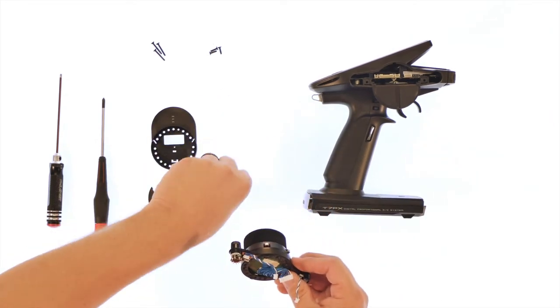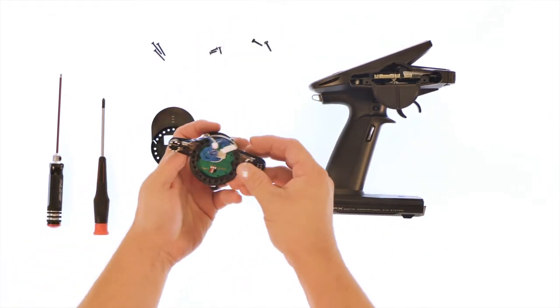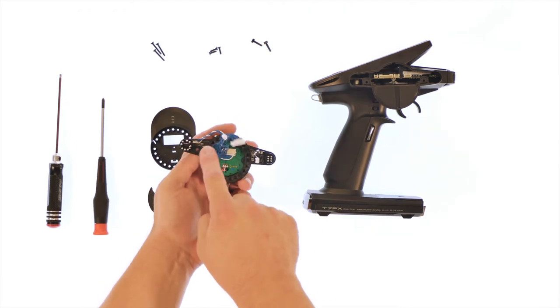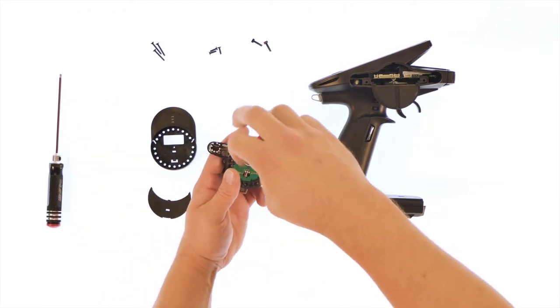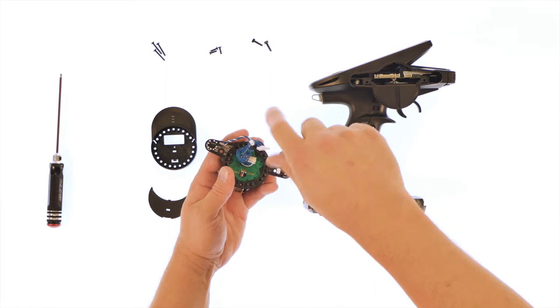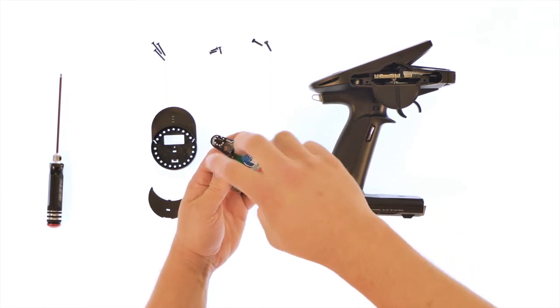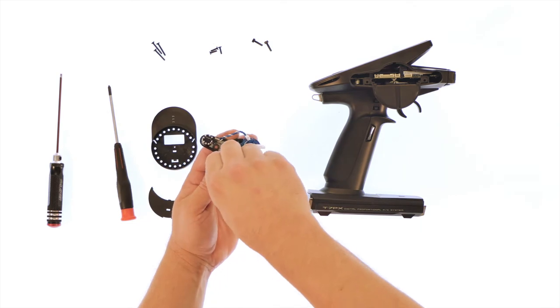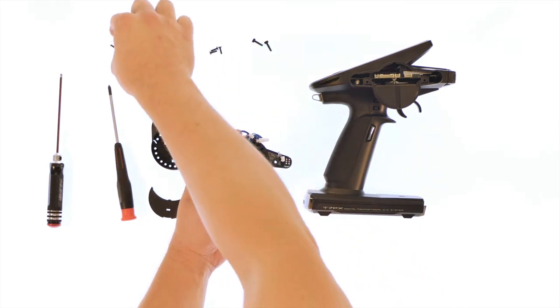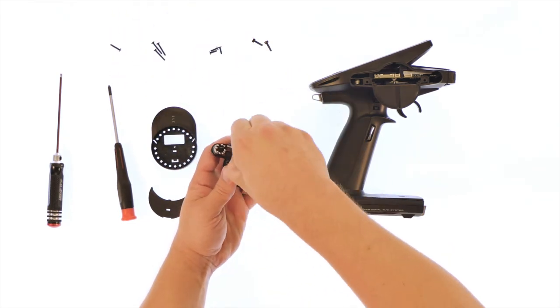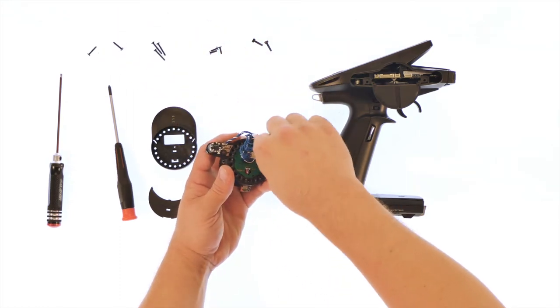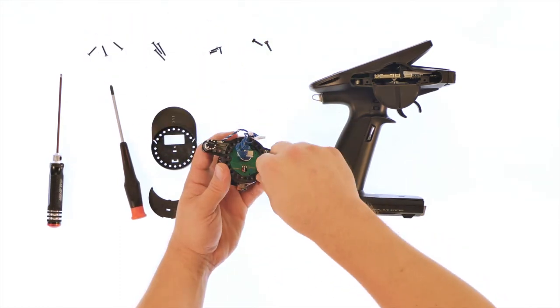We'll remove those two screws. You'll need those later. Now we'll remove the four Phillips screws. These screws you will not need, so we'll put those off to the side.